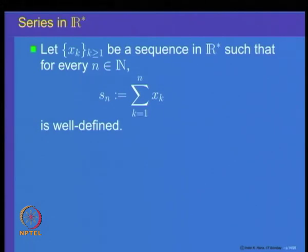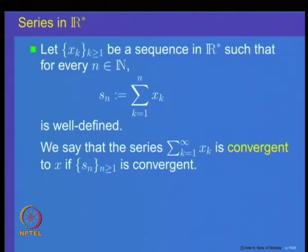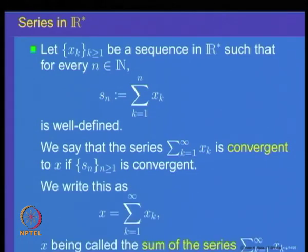From sequences, let us go to the concept of series. Suppose x_k for k ≥ 1 is a sequence in R*. Let us look at the partial sums S_n, which is the sum of the first n terms: S_n = summation k=1 to n of x_k. For every n this is well defined, and one can ask whether this sequence of partial sums is convergent in R*. If it is convergent in R*, we say the series is convergent and the limit is called the sum of the series — essentially the same as on the real line.